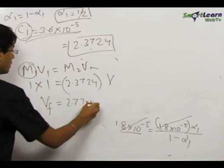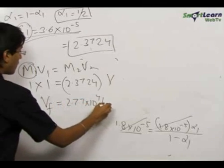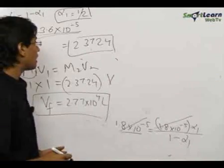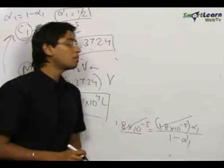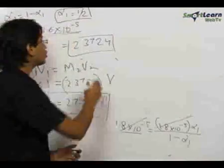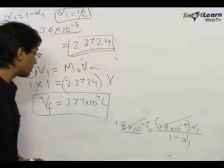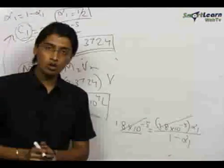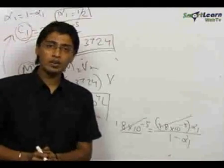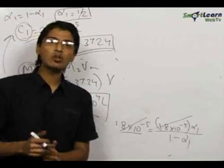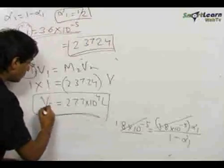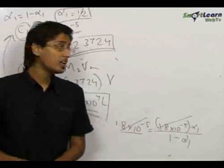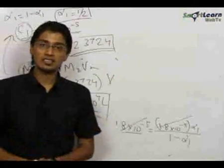Solving M1V1 = M2V2 gives the final volume = 2.77×10⁴ liters. To summarize: the pH of 1 molar acetic acid is 2.3724, and the solution must be diluted to 2.77×10⁴ liters so that the pH becomes twice the original pH. These are our two final answers.